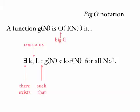such that the time complexity of g(N), or the running time of g(N), is less than constant k times running time of function of N for all N greater than L.